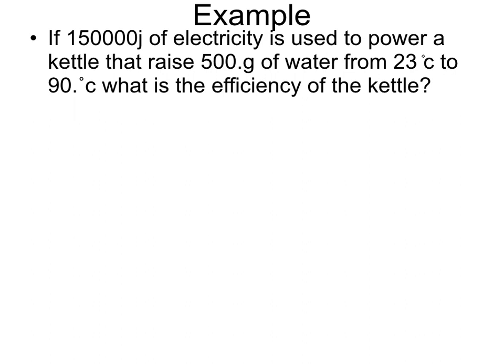Now, they've told us that 150,000 joules is used to power a kettle, so that's our work input. We don't have our work output yet, but we can calculate that. So write out what we have. We have our work input, which is 150,000 joules. We have our mass, which is 0.5 kilograms. We have our change in temperature, which is 67 degrees Celsius. From our formula sheet, we know the heat capacity of water is 4180 joules per kilogram degree Celsius.